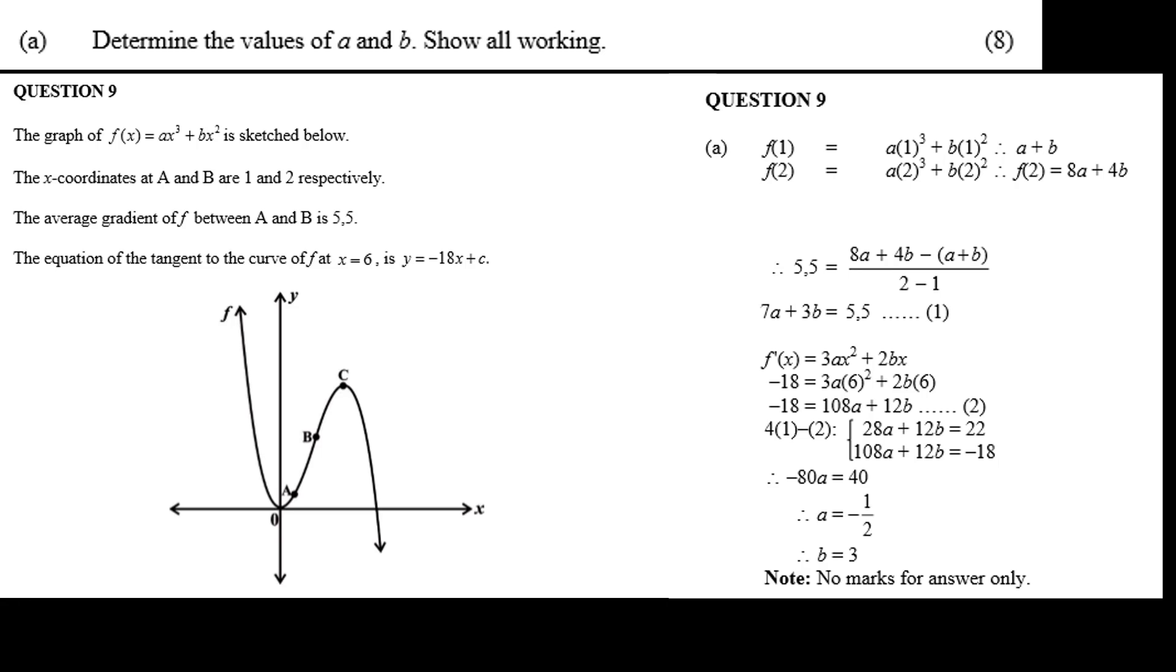Take 4 times equation 1, less equation 2, and we get 28a plus 12b equals 22. And 108a plus 12b equals minus 18. The b's cancel each other out, and you get minus 80a equals 40, or a equals minus a half.